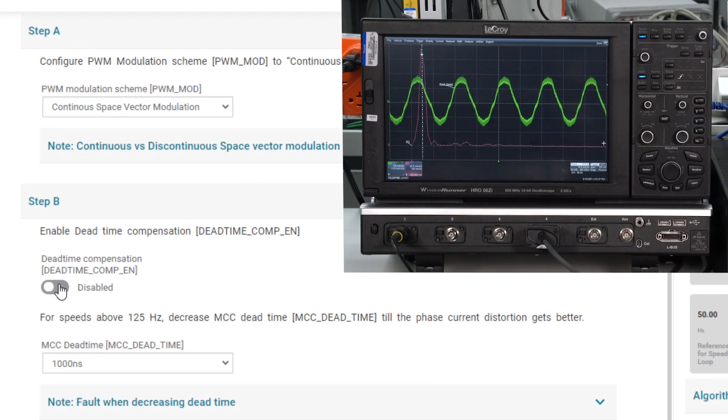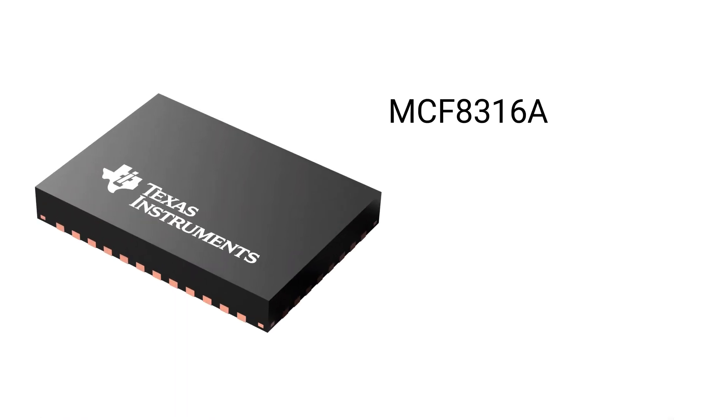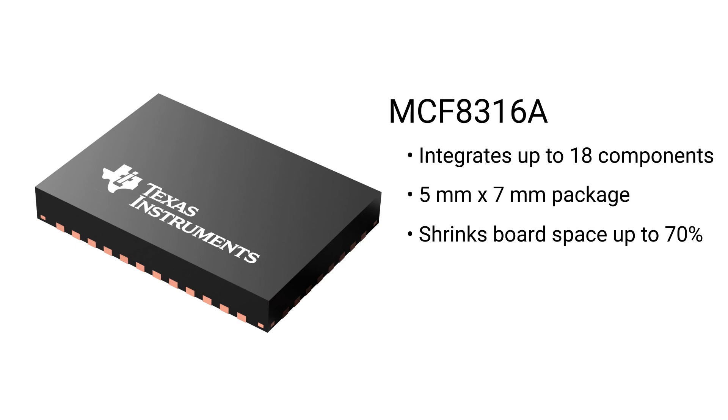TI-patented features like automated dead-time compensation, which can account for distortion in current waveform, deliver ultra-quiet motor operation. The MCF 8316A integrates up to 18 components in a 5mm by 7mm package, shrinking board space as much as 70% and optimizing total system cost.